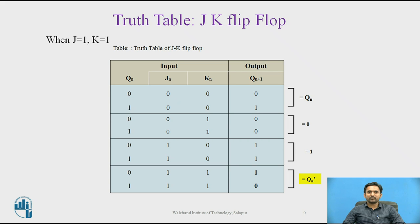When J equals K equals 1, this will cause the output to complement again and again. This complementing operation continues until the clock pulse goes back to 0. Since this condition is undesirable, we need to find a way to eliminate it. The undesirable behaviour can be eliminated by edge triggering of the JK flip-flop or by using a master-slave JK flip-flop.